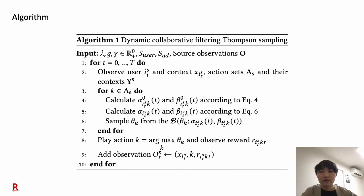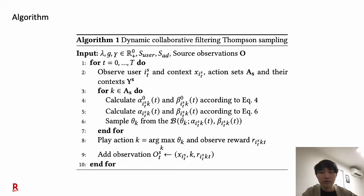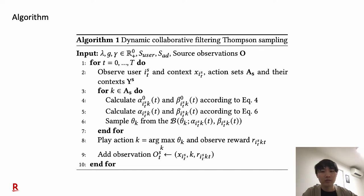Here is the algorithm of our proposed model, dynamic collaborative filtering Thompson sampling. Our model initially requires lambda, g, gamma, similarity functions S-user and S-ad, and source observations O. For each time step, we first observe user i, context x, action set A, and their context Y. Then at line 4, for each arm, we calculate alpha and beta for the prior distribution from the rewards of other ads and other users. At line 5, from the obtained prior knowledge, we calculate the posterior distribution, adjusting how we prioritize prior knowledge by parameter lambda. The remaining part is similar to Thompson sampling: we sample scores from the beta distribution and play the arm which maximizes the score. Finally, we observe the tuple of context, played arm, and reward, and add it to the observation of source S.